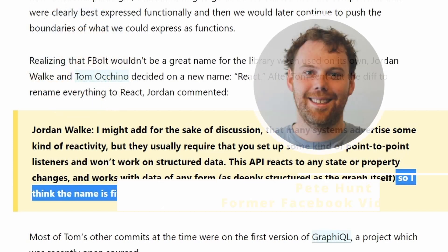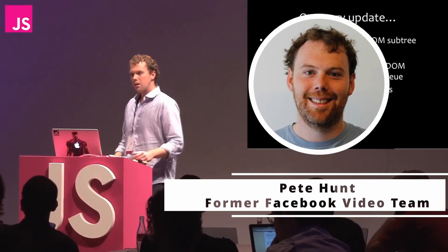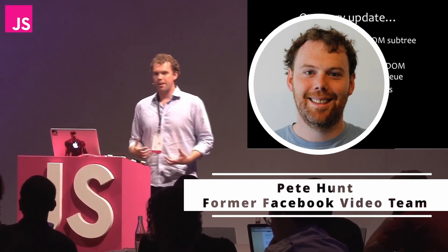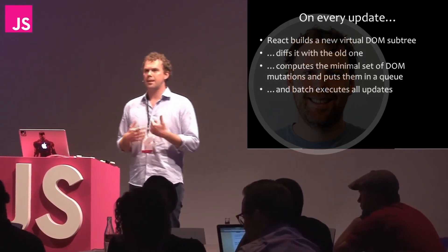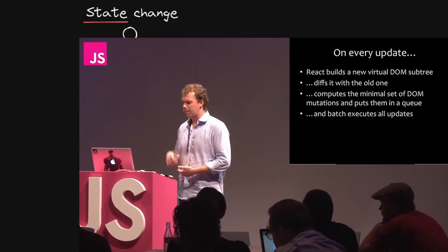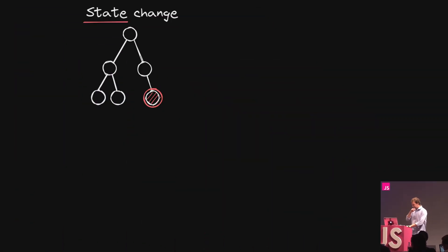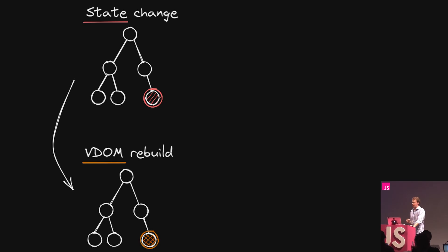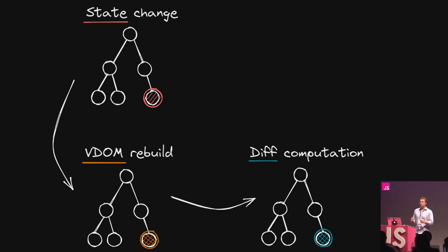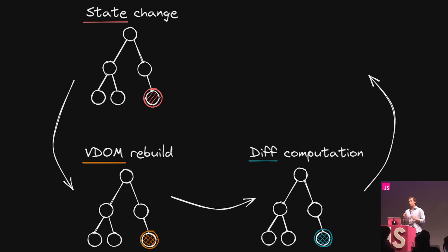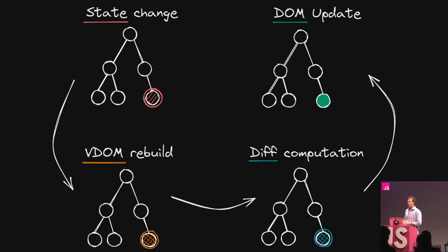This is actually one of the most fundamental concepts behind React. In the words of Pete Hunt: on every update from that setState call, React builds a new virtual DOM subtree, diffs it with the old one, computes the minimal set of DOM mutations, drops them into a queue, and then batch-executes all of the updates together.